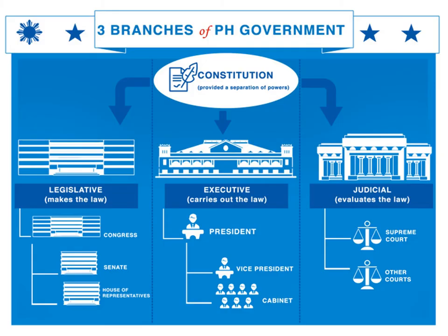Let us now discuss the structure of the three branches of government. First, the legislative department — this is the lawmaking body of the Philippines, vested in Congress. Our Congress is divided into two: the upper house and the lower house. The lower house is composed of the House of Representatives, or the congressmen.